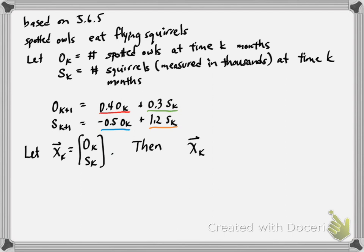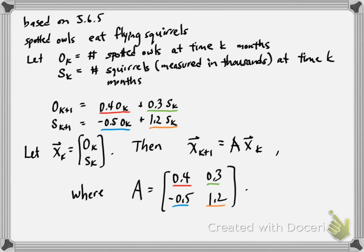Let's set up our discrete dynamical system. Let X sub K be this vector OK, S K. Then X sub K plus 1 is A times X sub K, where this matrix A has 0.4 in the top left entry, 0.3 in the top right entry, negative 0.5 in the bottom left, and 1.2 in the bottom right. Now if we're going to study this dynamical system, we need to study this matrix A.